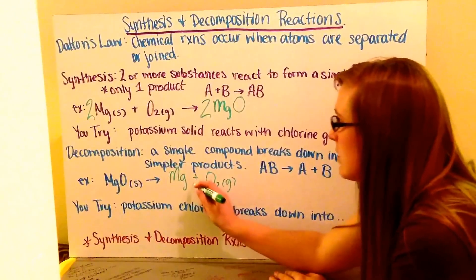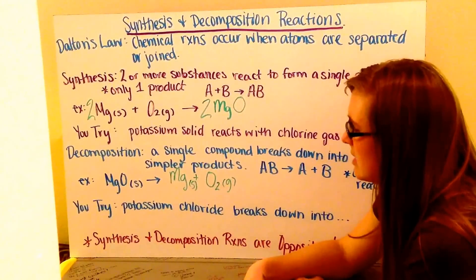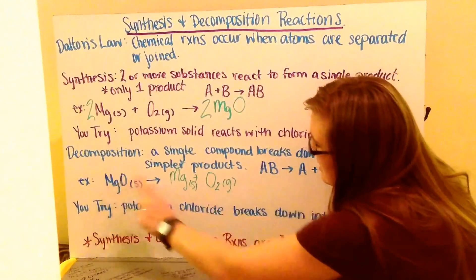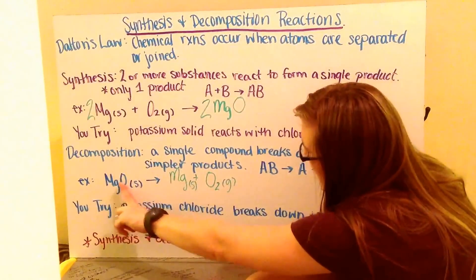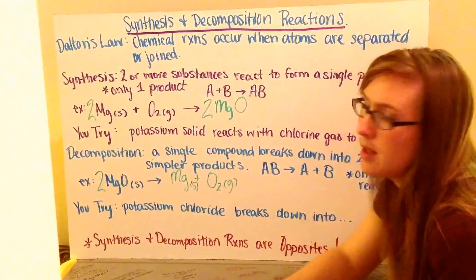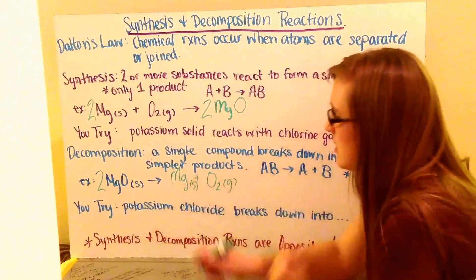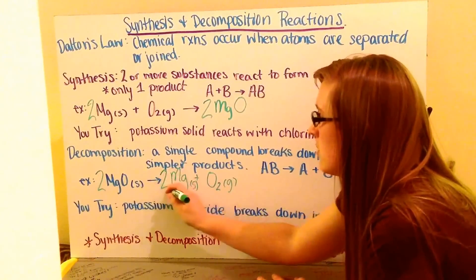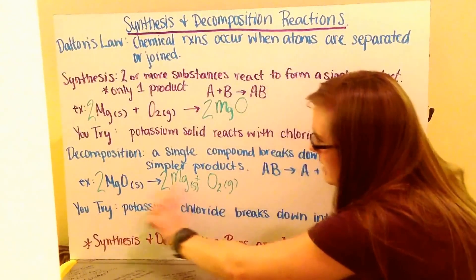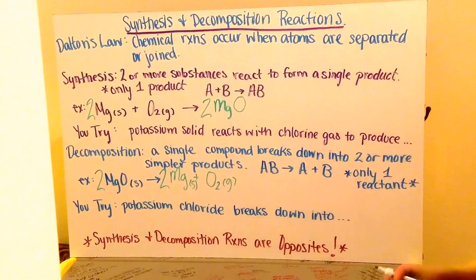Magnesium is a metal, so I can write S for solid after that. Then I need to balance my chemical reaction. One magnesium, one magnesium. One oxygen, two oxygen. So I need to put a two in front of magnesium oxide. Then I check again. Two magnesiums, one magnesium, so I need to put a two in front. I check again. Two magnesiums, two magnesiums. Two oxygen, two oxygen. I now have a balanced chemical reaction.